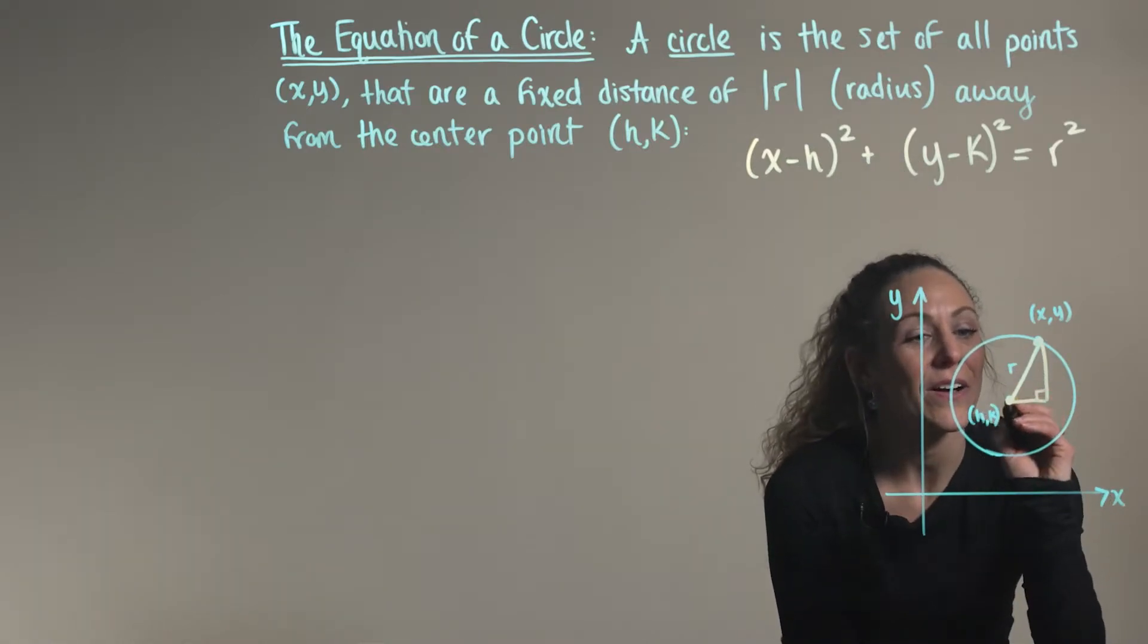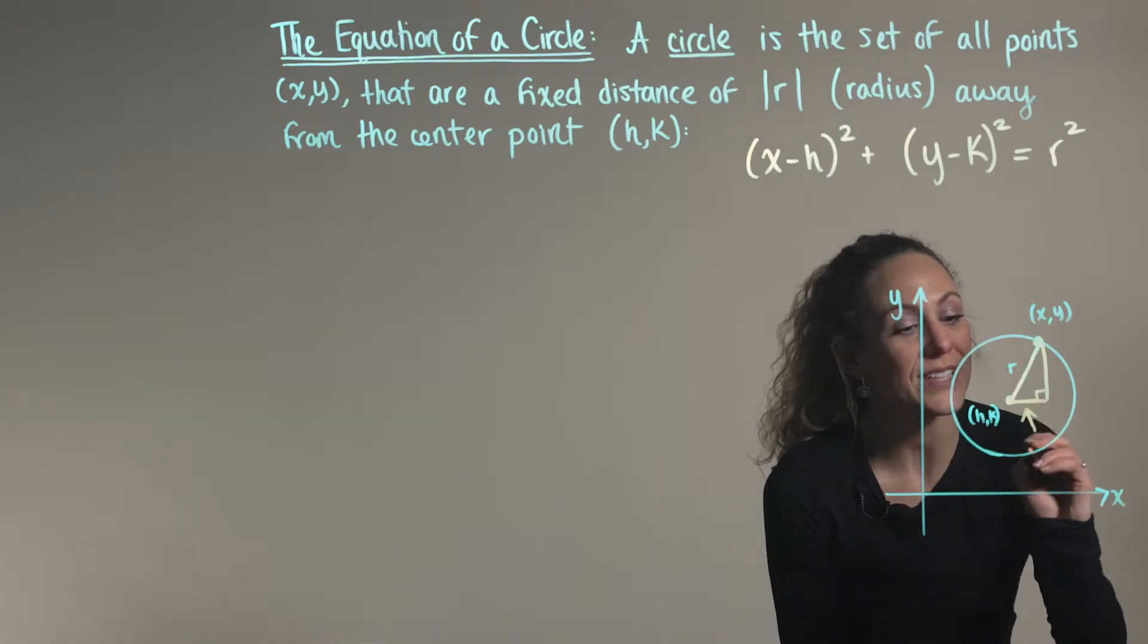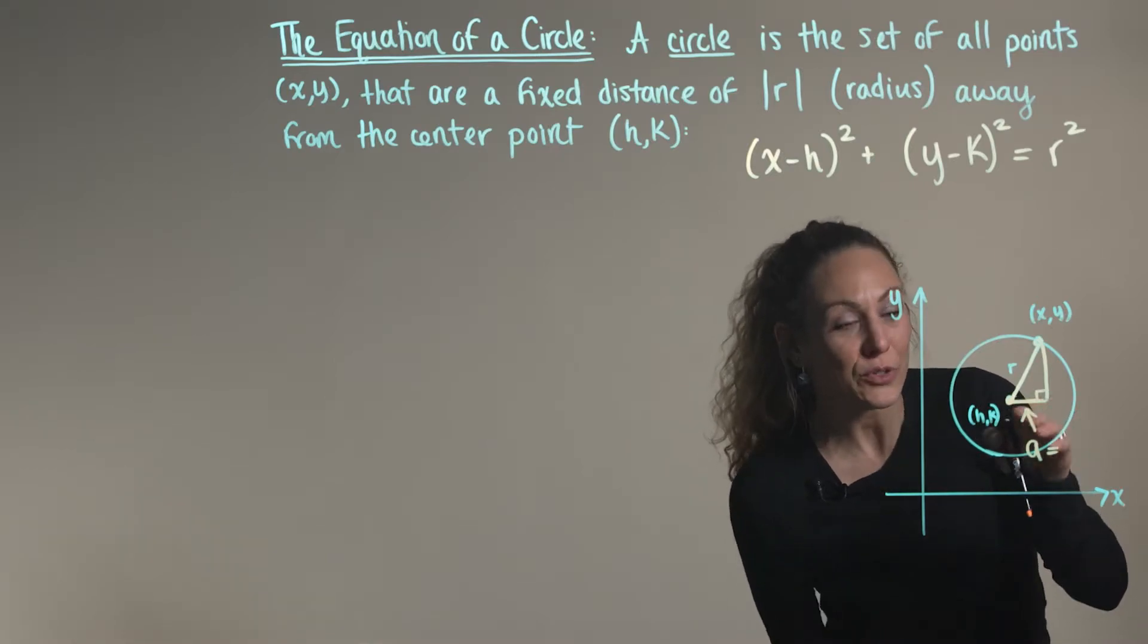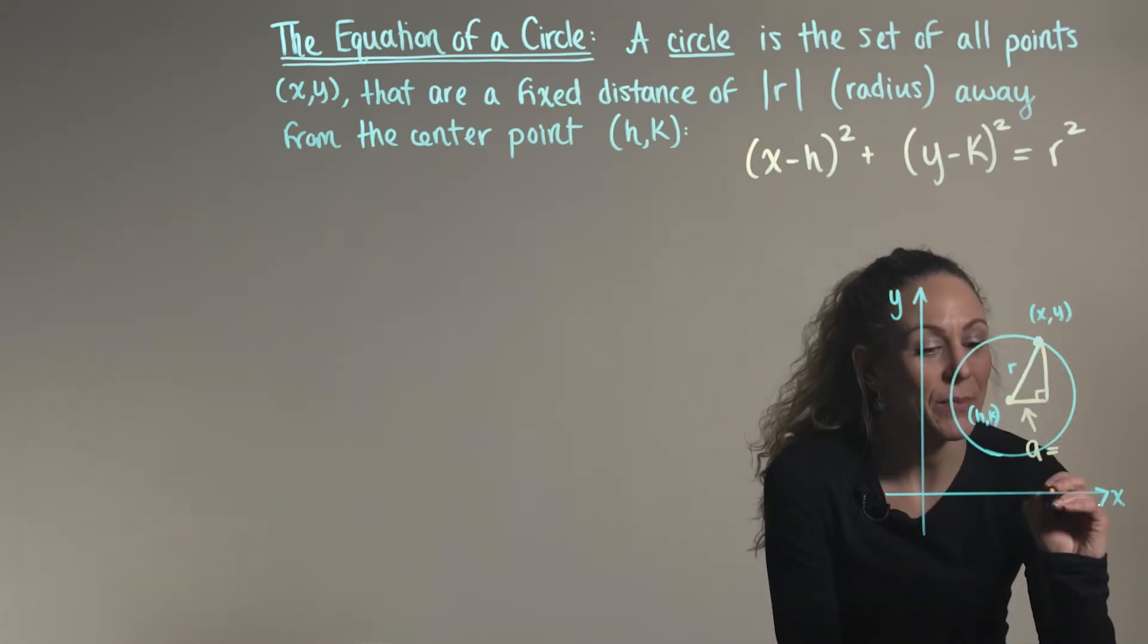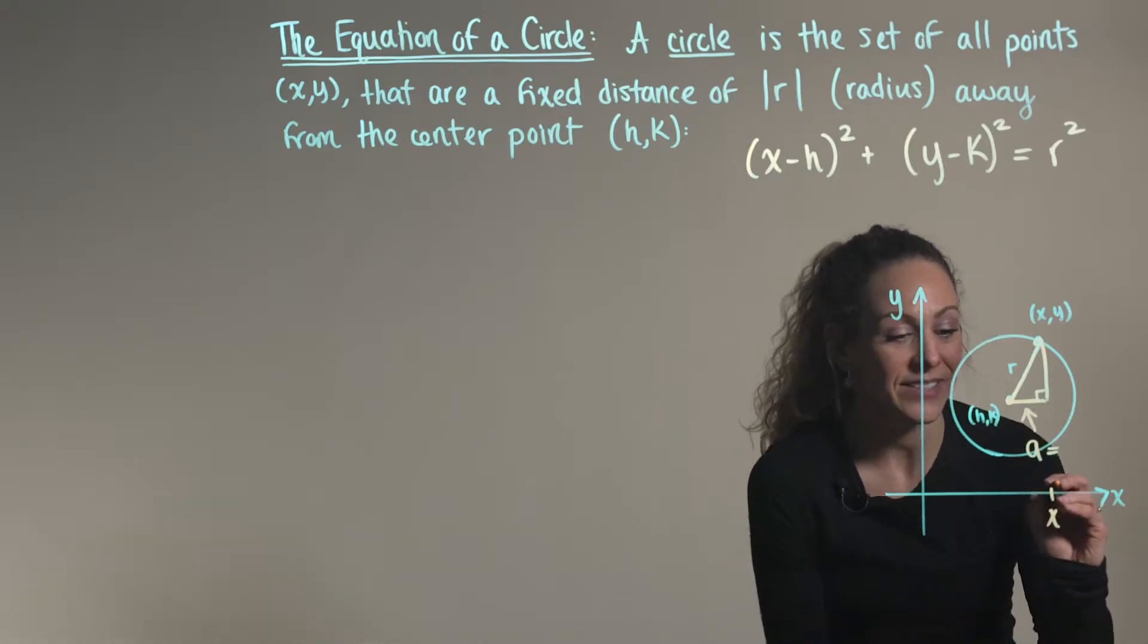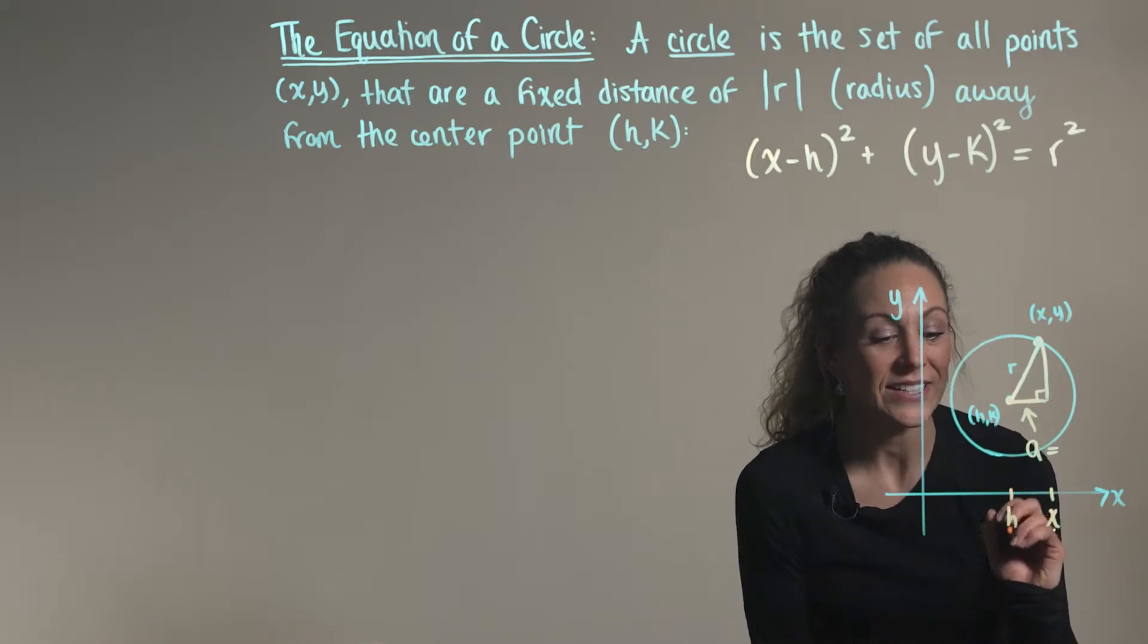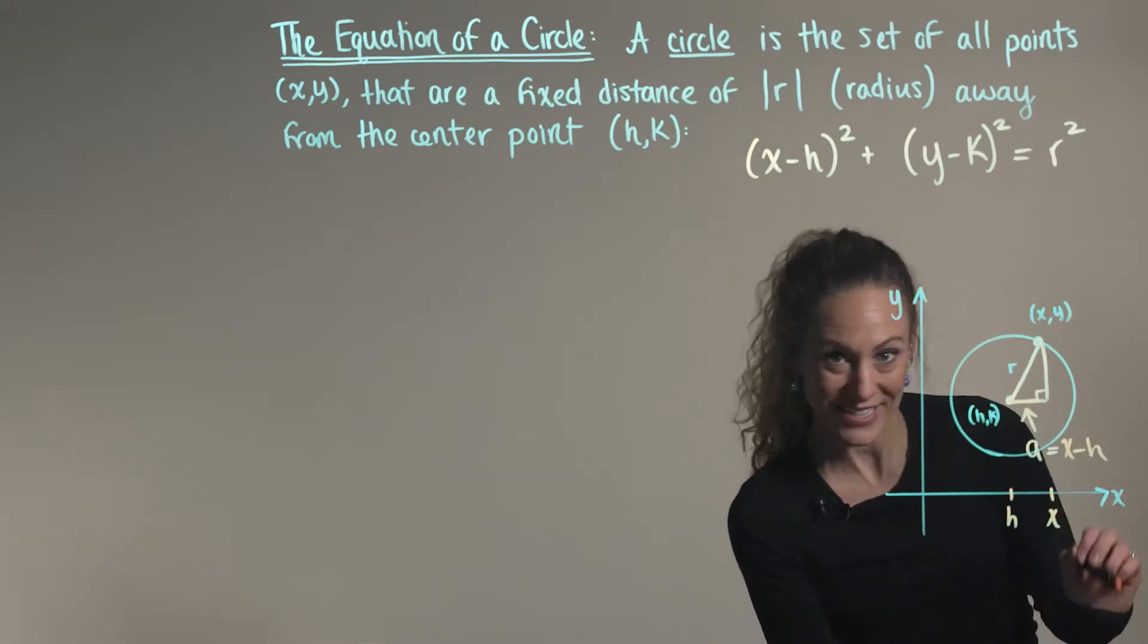So the length of the base of our right triangle is going to represent a from Pythagorean's theorem. And this is going to be the change in your x values. So we can think about the change in x, or the length x minus the length h. So a = x - h.